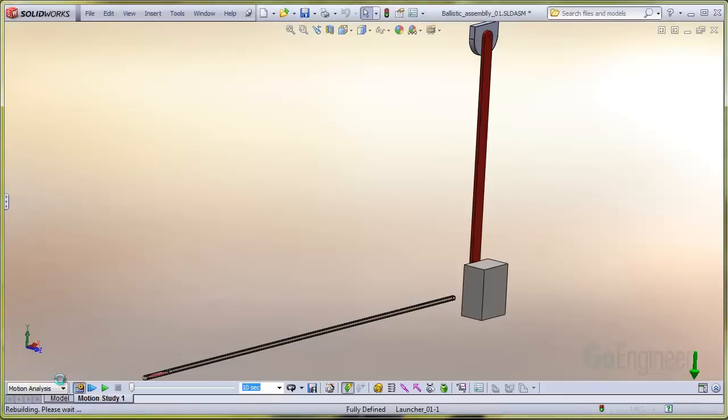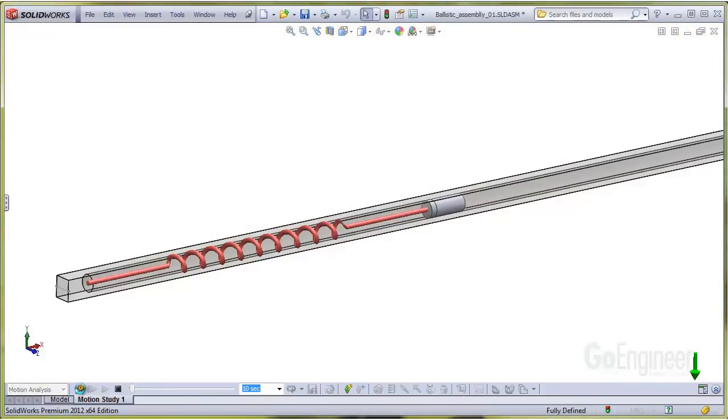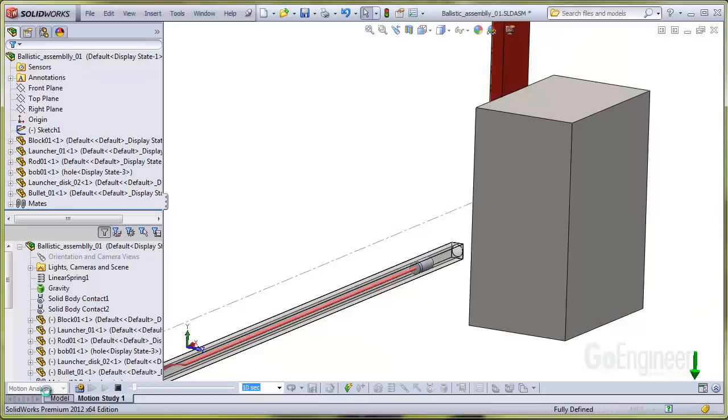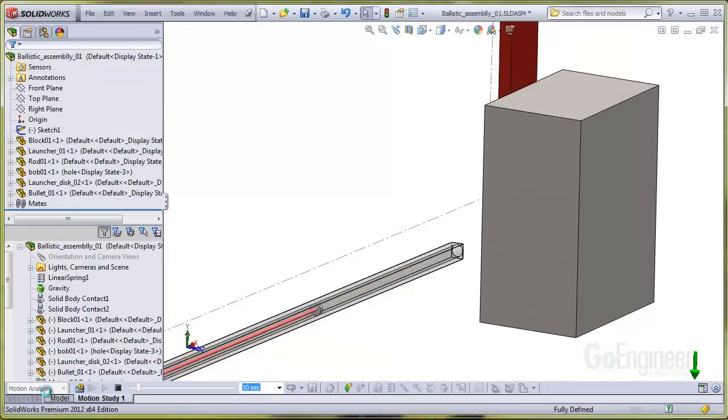Here we fire a .22 caliber projectile bullet into a 1.5 kg pendulum. This is the popular ballistic pendulum you may have worked in a Physics or Mechanics course. If you measure the maximum height of the pendulum after impact, you can determine the projectile muzzle exit velocity.